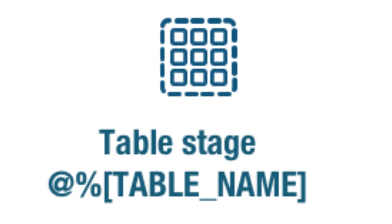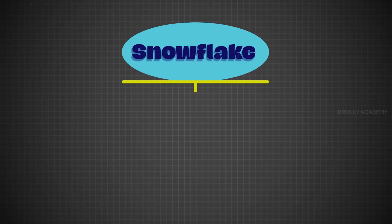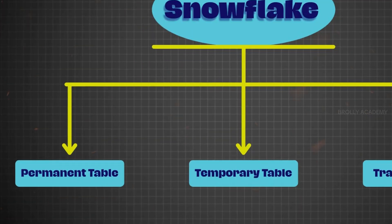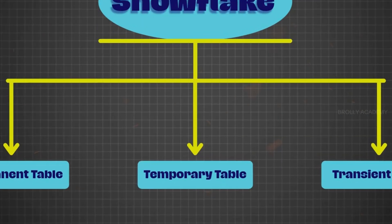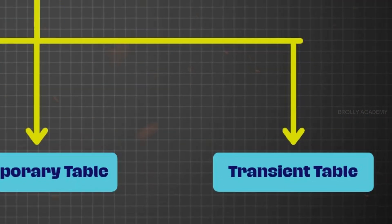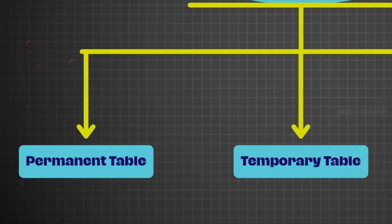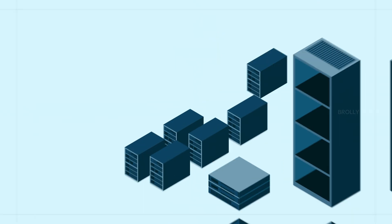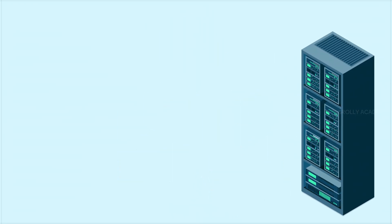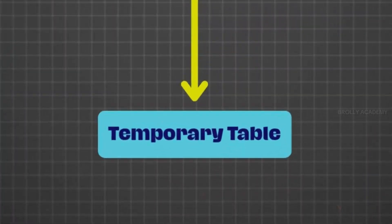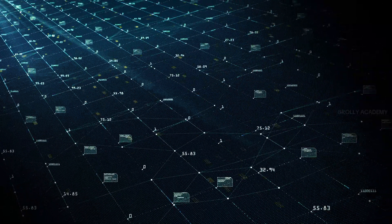Table Types and Storage. Once we load data, we need to manage it. There are three types of tables in Snowflake: Permanent Table, Temporary Table, and Transient Table. A Permanent Table saves data permanently. A Temporary Table saves data only for the duration of a session.